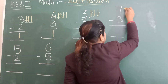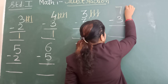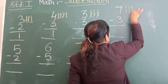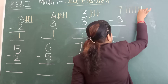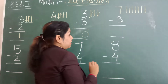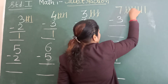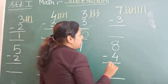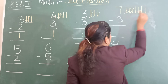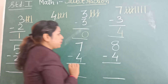Here we have 7. First number is 7, so you will draw 7 lines: 1, 2, 3, 4, 5, 6, 7. And how many lines you will cut? You will cut 3 lines: 1, 2, 3. How many lines remain? 1, 2, 3, 4. The answer is 4.